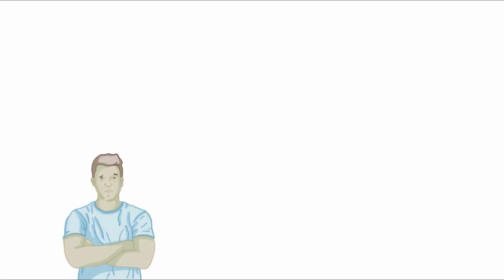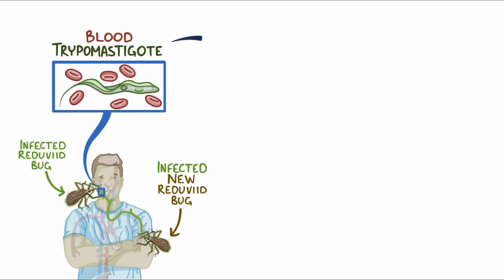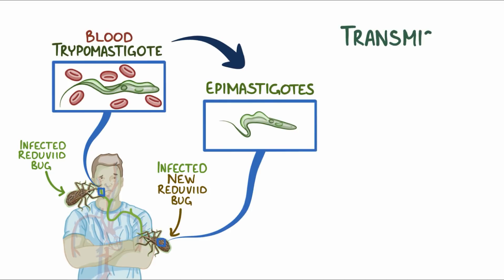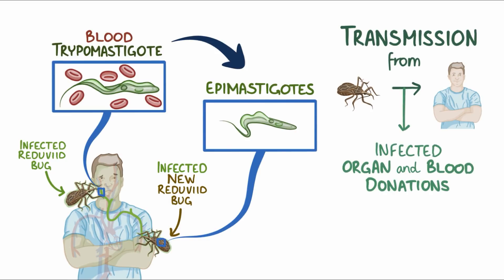A person infected by a T. cruzi-infected reduviid bug can then get bitten by a brand new reduviid bug. In that case, the reduviid bug might get infected by the tripomastigotes, and those tripomastigotes would make their way into the reduviid bug's midgut and then differentiate into epimastigotes, completing the life cycle. Transmission from the reduviid bug to a person can also happen through infected organ and blood donations, which is why blood screening is super important, and it can also spread from mother to child during a pregnancy.